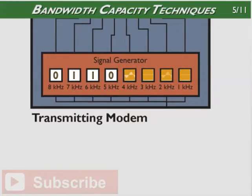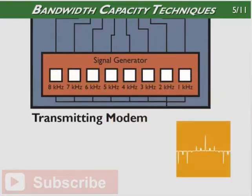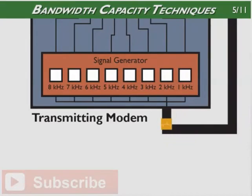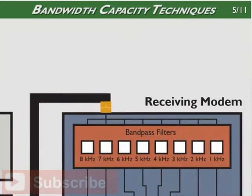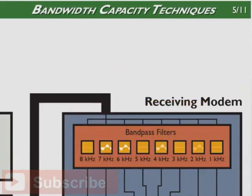If a bit is a logic 1, the corresponding generator activates and produces a signal at its defined frequency. Every individual signal is modulated into one signal. It contains information that, when decoded, determines exactly which bits were sent and which were not. This combined signal can be transmitted over a single cable to a modem at the destination system. The modem at the receiving end demodulates the signal. It uses a bandpass filter to determine whether the incoming signal contains a frequency corresponding to a bit. Each bandpass filter activates only in the presence of a certain frequency. If its frequency is found in the signal, it produces a logic 1; if not, it produces a zero.